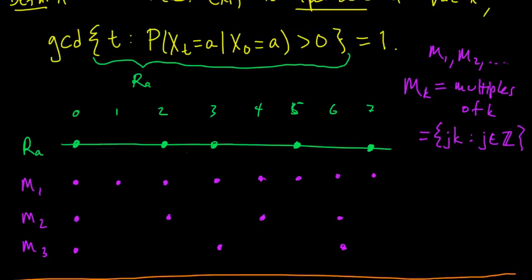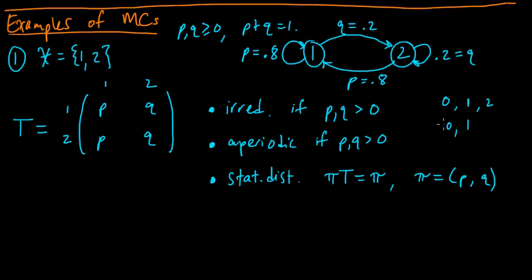That was a first super simple example of a Markov chain. Next we'll look at a slightly more interesting one with a few more states to see some more interesting behavior, but we're running out of time in this video, so we'll come back and look at more examples.